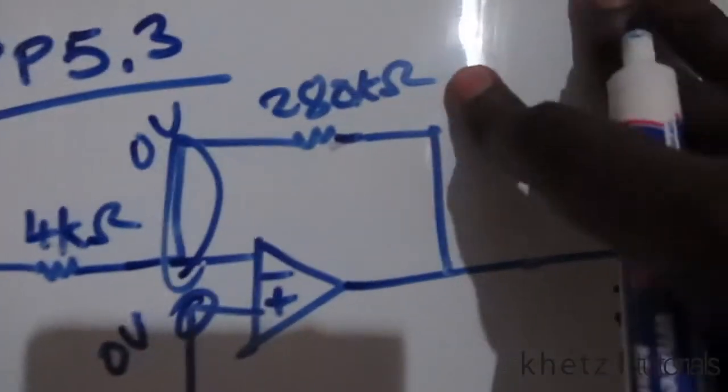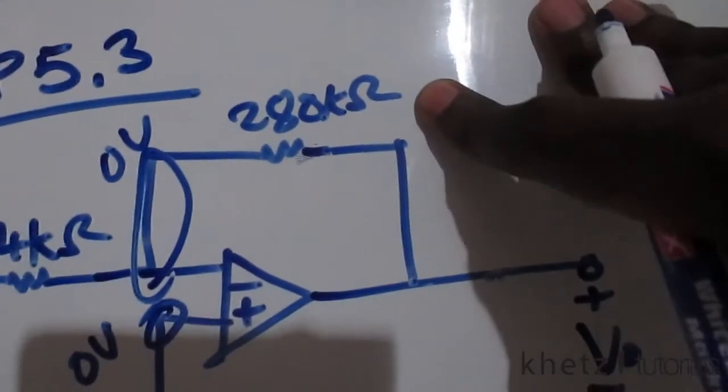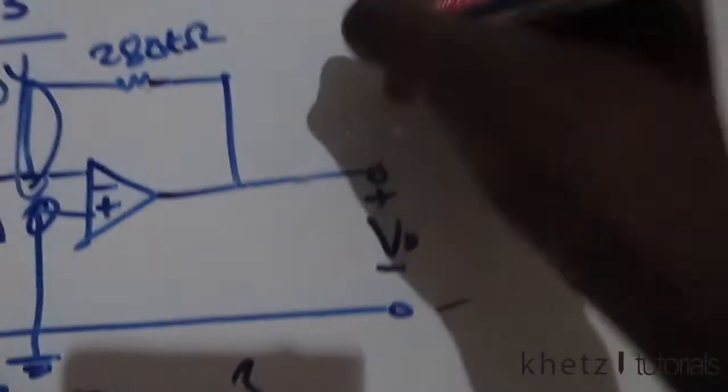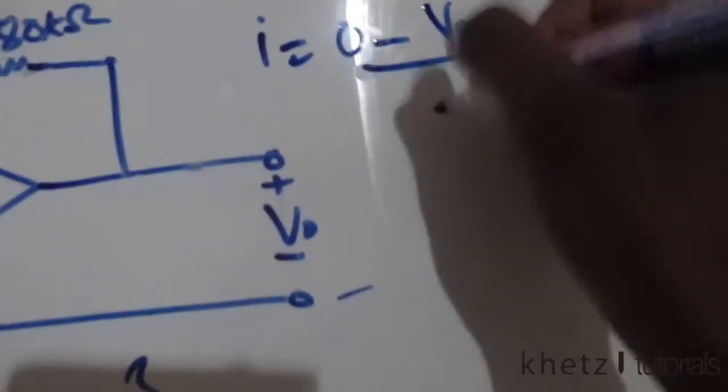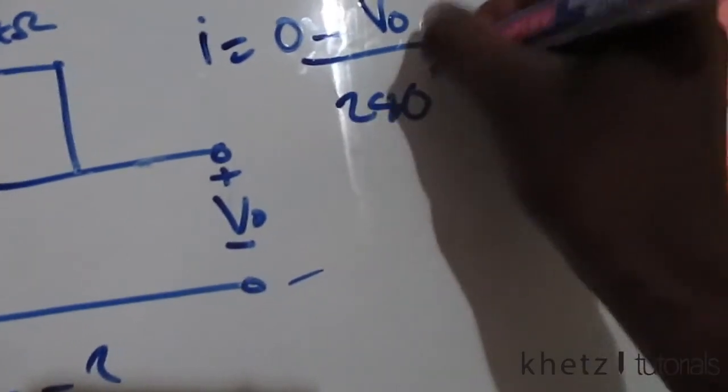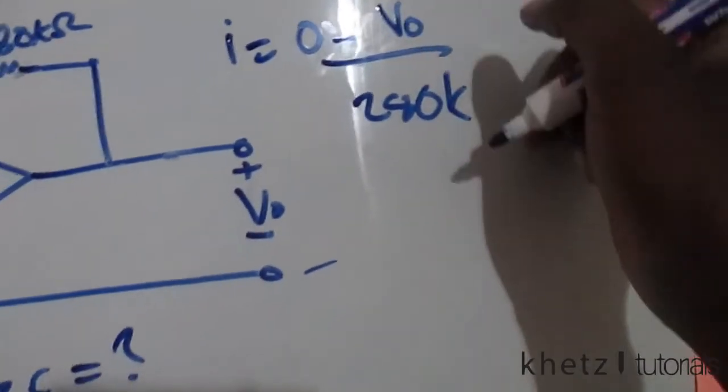Find the current which goes through the feedback resistor 280 kilo ohms. I is equal to zero subtract Vo divided by 280k. We now find the value of Vo to be negative 3.15.